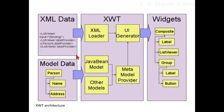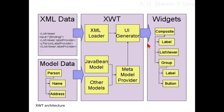Here you can see the XML data, and here the model data — for example, a Person class connected to name and address. The XML data and model data are connected to XWT. The XML load is connected to the UI generator. The Java Bean model and other models are connected to the model provider, and the metadata model provider is connected to the UI generator. XWT is connected to widgets — composite is connected to label, list viewer, and group; group is connected to label and button.